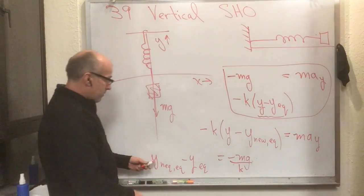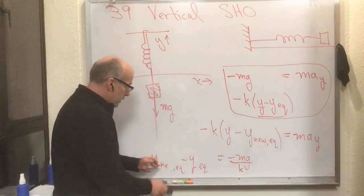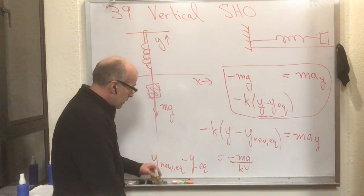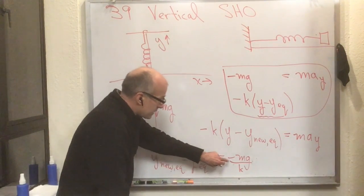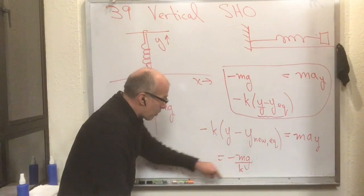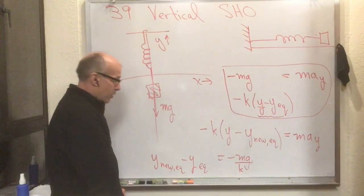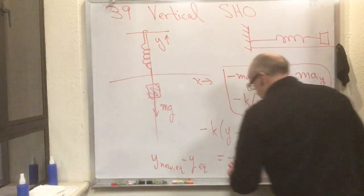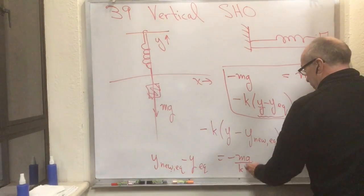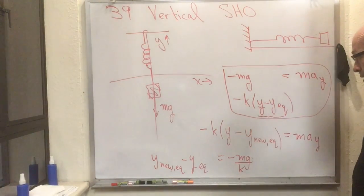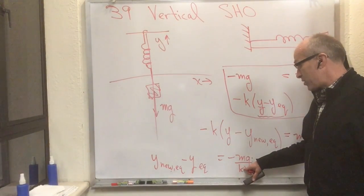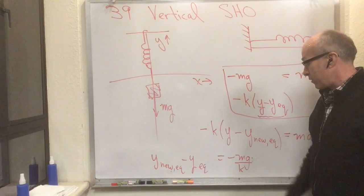And I discover that y_new_eq is a certain amount lower than—see the minus sign here—that means it's lower than the original equilibrium position of the spring. And how much lower? Well, mg over k lower, which is exactly how much you have to stretch that spring to create an mg force in the up direction.